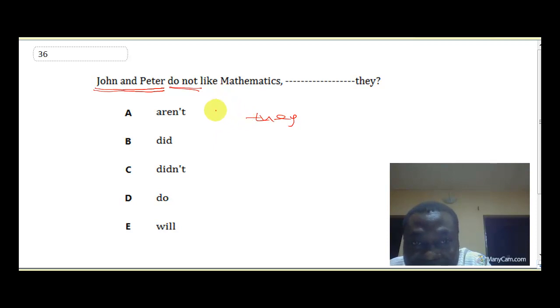And hence a positive question tag is required. Okay, and don't forget the auxiliary verb do here is used, so it has to be repeated, it must be repeated in the question tag. And since this one is negative, you have to use the positive form do. Do they? Do they? Peter, John and Peter do not like mathematics, do they? So which one now? Option D, do they.